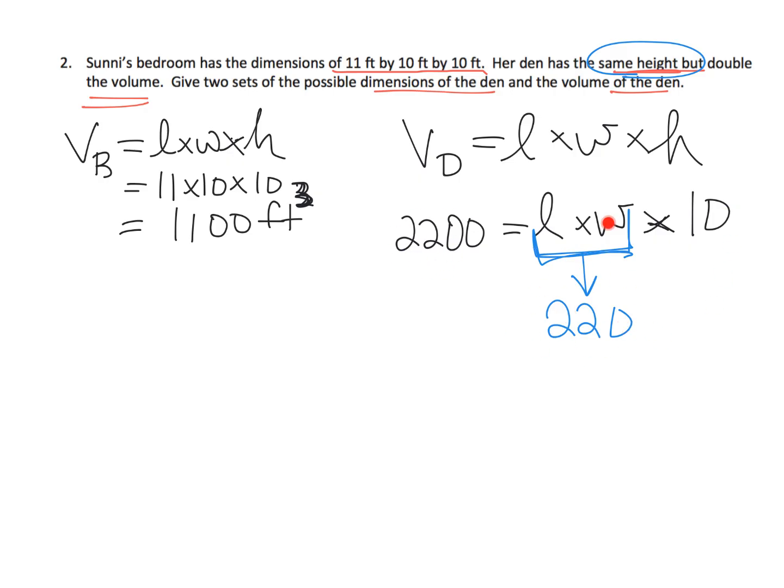So you just need to find two numbers that can be multiplied together to equal 220. And then you need to find another set of two numbers that when multiplied gives us 220. And that wraps up that problem.